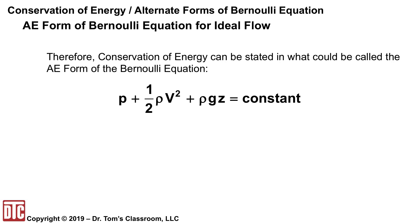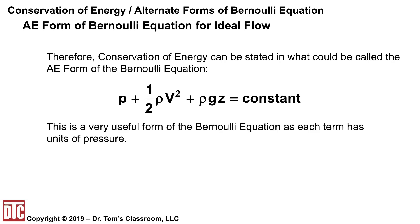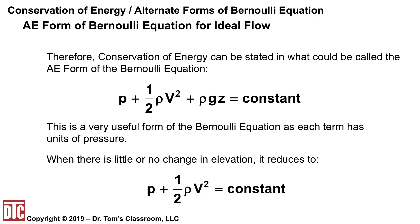This is what I call the AE form — you'll see why shortly. It's probably the most useful Bernoulli equation, as each term has units of pressure. When certain kinds of problems show up, this form works much better than the CE form and definitely better than the ME form. When there's very little change in elevation, the equation simplifies to p plus one-half rho v squared equals a constant.